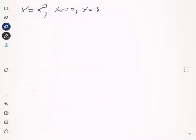In this lecture we are going to find the volume of a region by revolving it about the x-axis. We're going to start with the region y equals x cubed, x equals zero, y equals eight, about the x-axis.